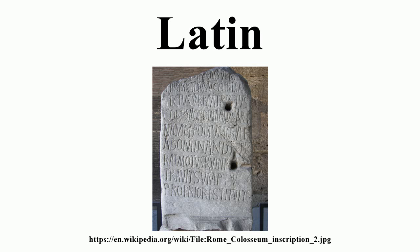Switzerland adopts the country's Latin short name, Helvetia, on coins and stamps, since there is no room to use all of the nation's four official languages. For a similar reason it adopted the international vehicle and internet code CH, which stands for Confoederatio Helvetica, the country's full Latin name. Many organizations today have Latin mottos, such as Semper Paratus, the motto of the United States Coast Guard, and Semper Fidelis, the motto of the United States Marine Corps. Several US states also have Latin mottos, such as Qui Transtulit Sustinet for Connecticut, Ad Astra Per Aspera for Kansas, Si Quaeris Peninsulam Amoenam Circumspice for Michigan, Salus Populi Suprema Lex Esto for Missouri, Esse Quam Videri for North Carolina, Sic Semper Tyrannis for Virginia, and Montani Semper Liberi for West Virginia.